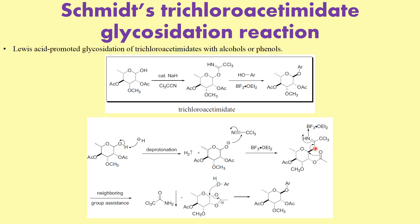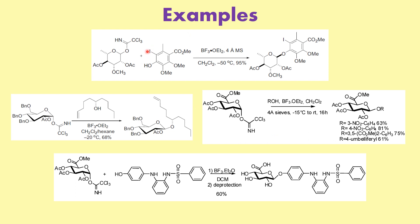Let's look at a few examples quickly. In the first example, you can see this trichloroacetimidate derivative and the acetate group is going behind the plane. After that, we use phenol in the presence of BF3·Et2O. You can clearly see that both oxygen atoms have trans stereochemistry — the product is coming out of the plane because the acetate was behind the plane, due to neighboring group participation.